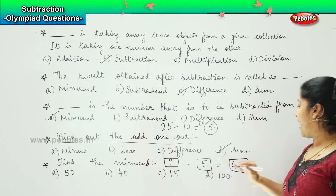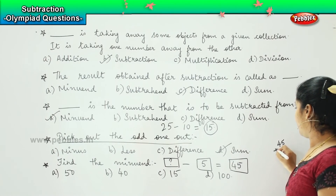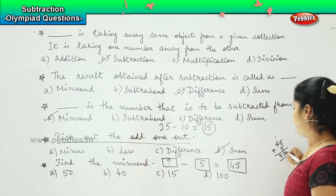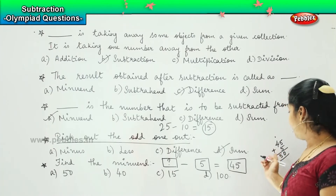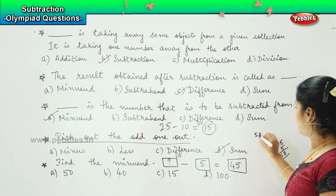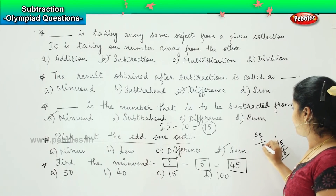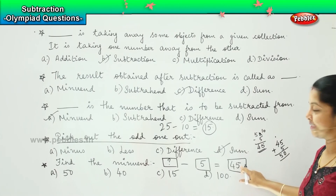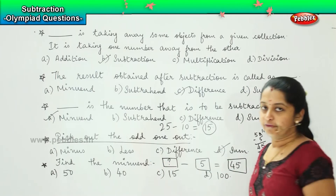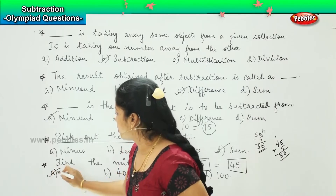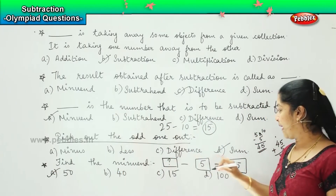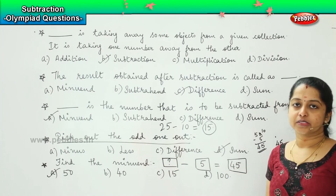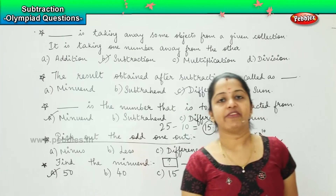So we will add 45 plus 5. The answer is 50. Now verify: 50 minus 5 equals 45. Yes, it gives us 45. So the answer is A: 50. Whenever you need to find the minuend, you can add the difference with the subtrahend to get your answer.